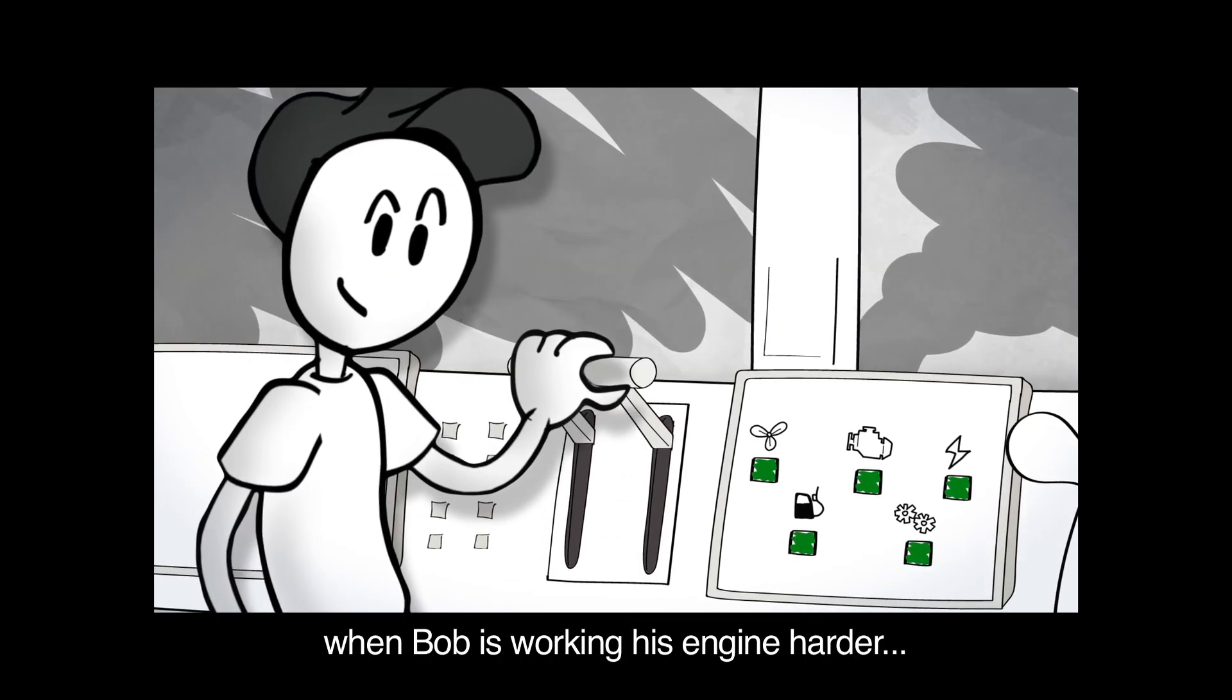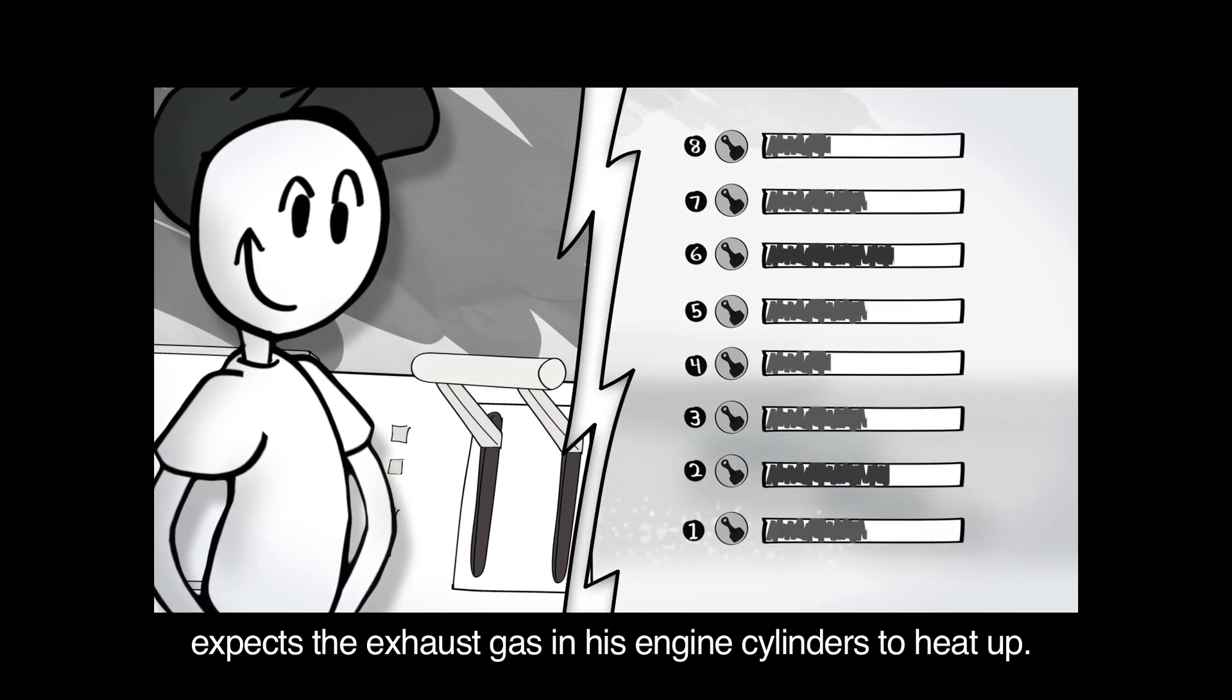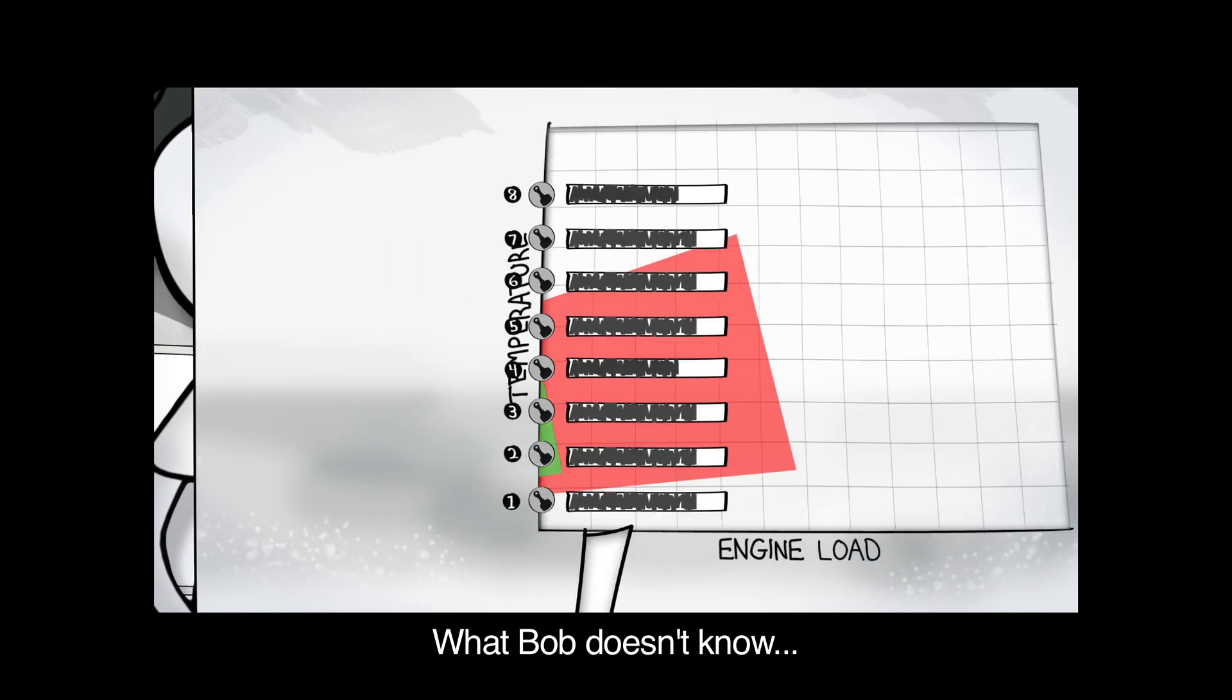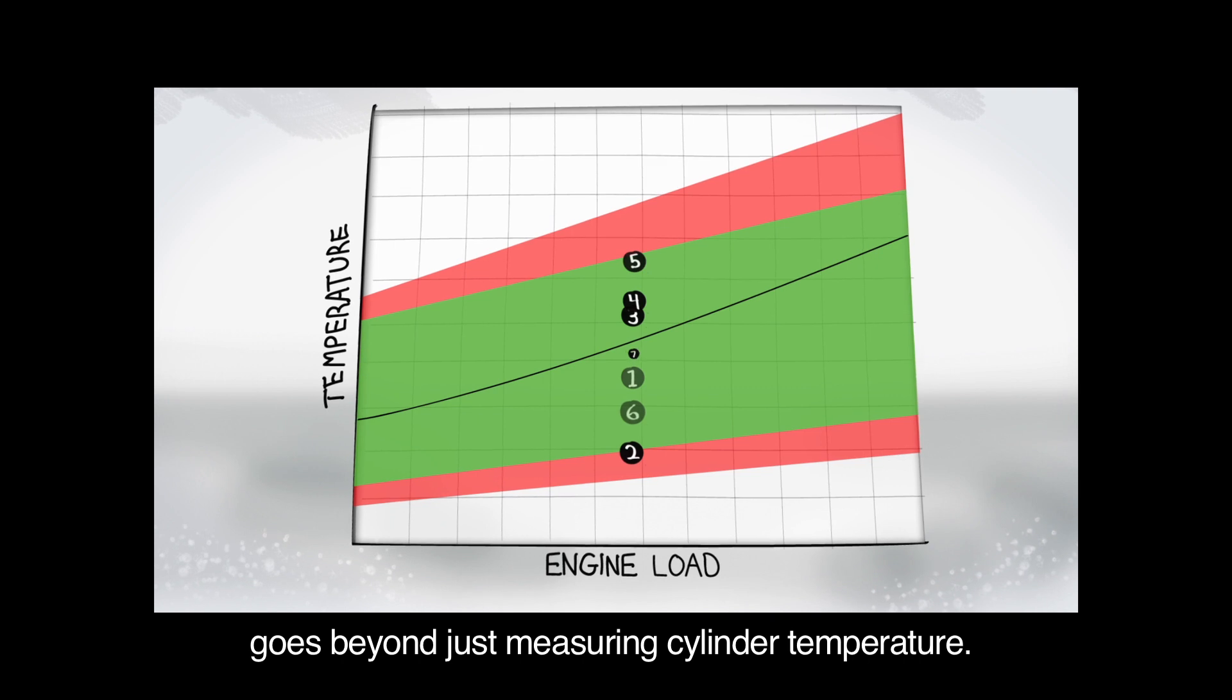For example, when Bob is working his engine harder, CAT Asset Intelligence expects the exhaust gas in his engine cylinders to heat up. What Bob doesn't know is that CAT Asset Intelligence goes beyond just measuring cylinder temperature.